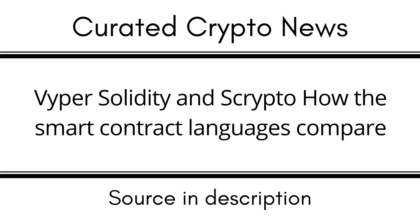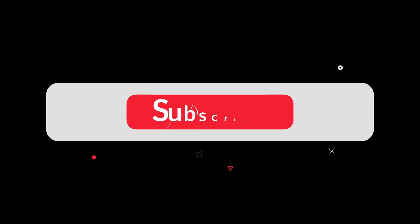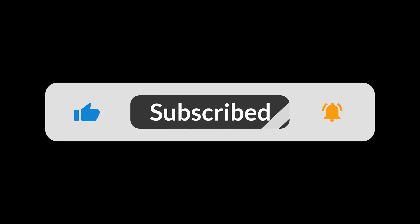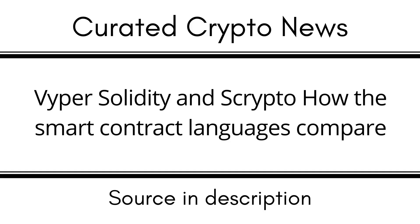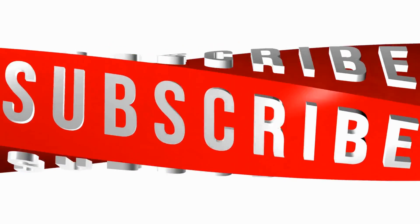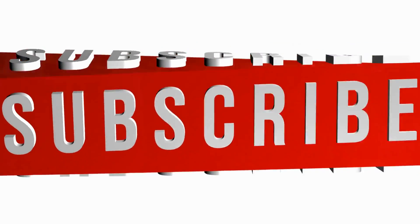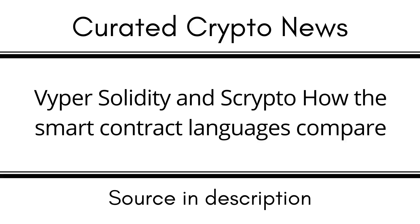A look at three different programming languages for blockchain networks and how they compare. The Ethereum network brought smart contracts into the blockchain space, making concepts like decentralized finance (DeFi) possible. Smart contracts can automatically execute processes once certain conditions have been met. Along with this new technology, a new coding language called Solidity was developed. As the blockchain industry grows and new networks emerge, additional languages like Vyper and Scrypto are being brought into the space. Programming languages are a set of rules that convert strings of text and numbers into machine-readable code.